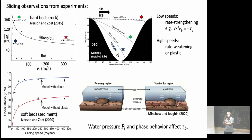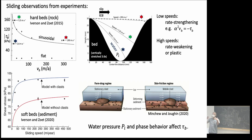Ice speed and driving stress are not spatially correlated — a scatter plot of all one-kilometer-square data points for Antarctica shows no clear direct relationship between the two parameters. What can we say about sliding from experiments? The local shear stress underneath glaciers can't be observed very well, so we turn to lab experiments to inform us about how everything works.